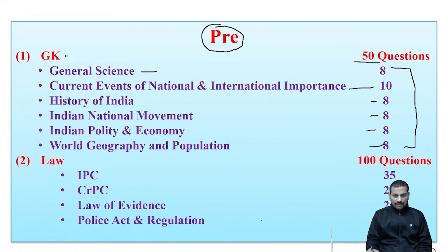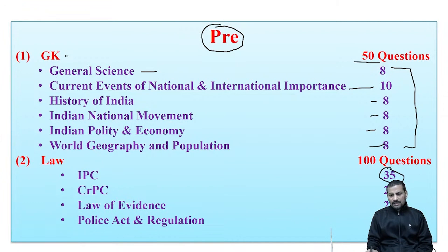In the Law section, there are 4 subjects worth 100 marks. IPC has the most - 35 questions. CRPC has 25 questions, and Law of Evidence has 25 questions. So that is 50 plus 35 questions, totalling 85, and the remaining 15 questions come from the other subjects.